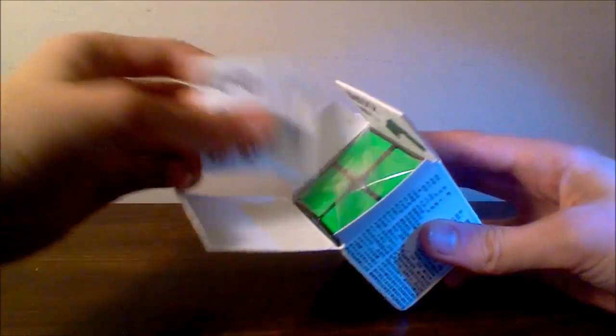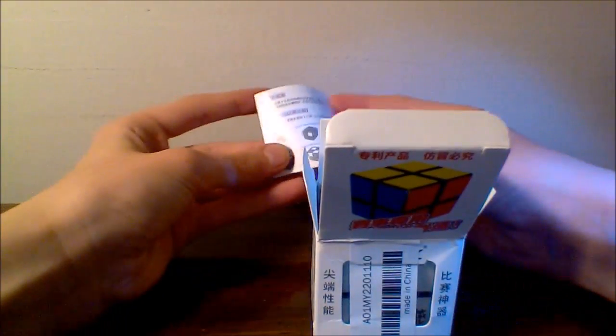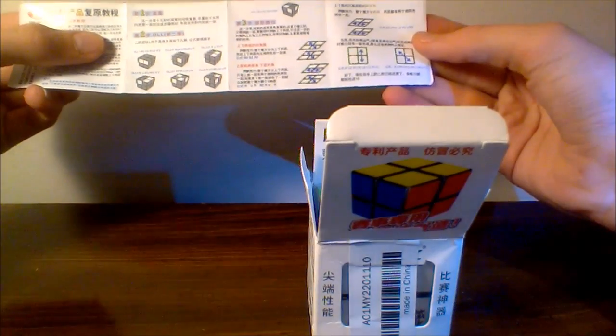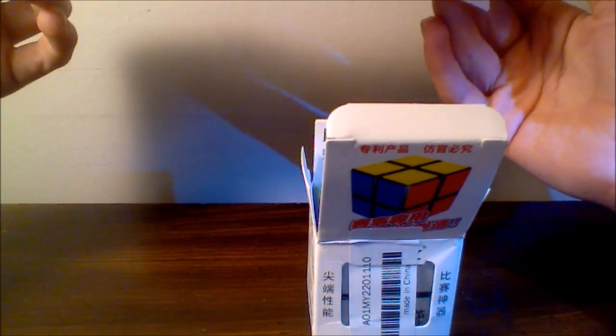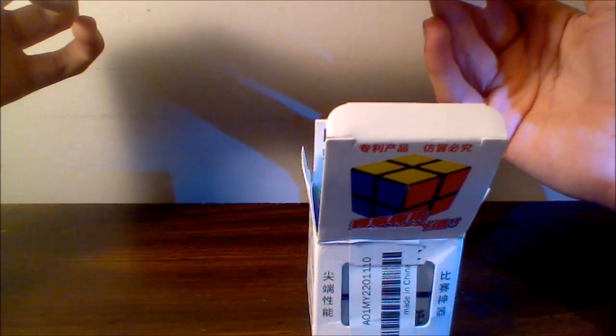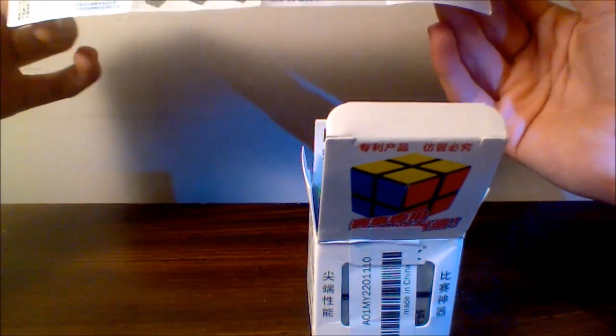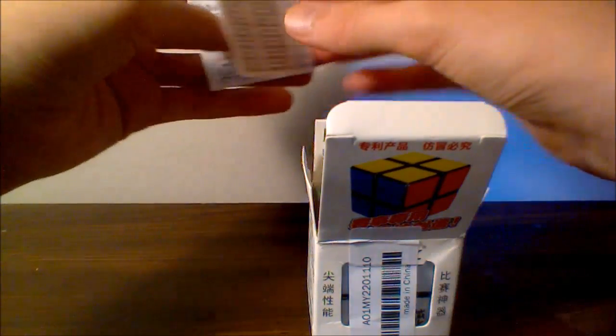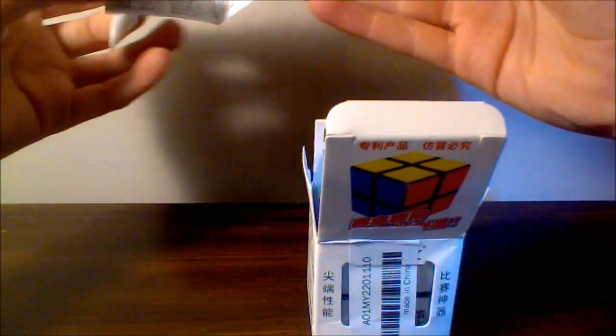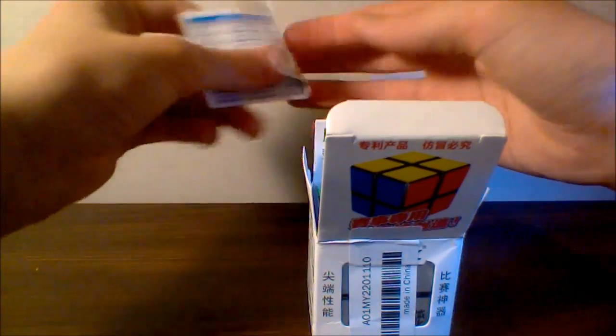So the first thing in the box is this little booklet here. It has how-to-solve instructions and it looks as though this is CFOP for 2x2. That's interesting because you would have thought they would have done a 2x2 variation of the basic 7-step method.